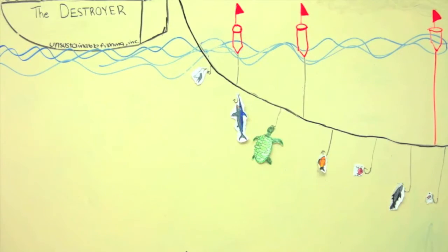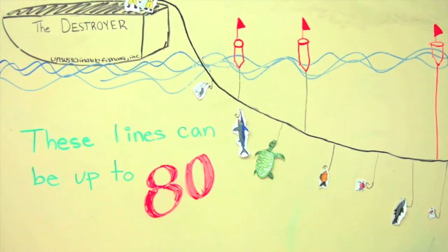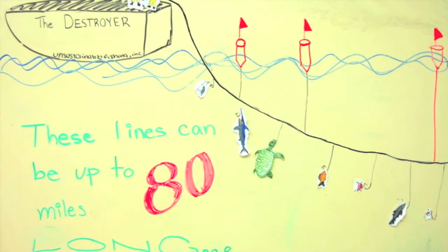Bycatch includes sea turtles, seabirds, dolphins, and sharks. These sea animals are then thrown overboard and rarely survive the encounter.